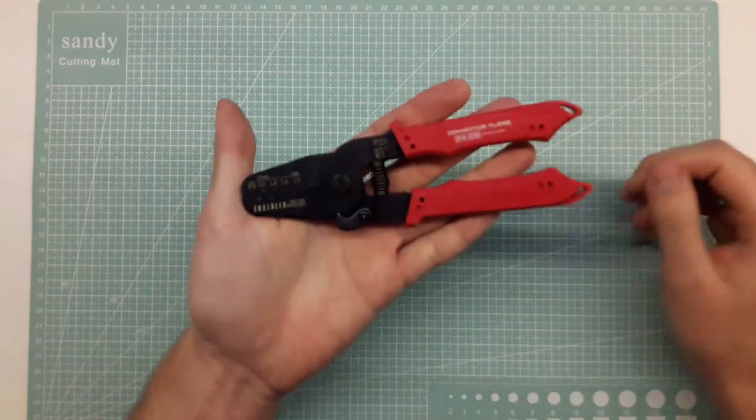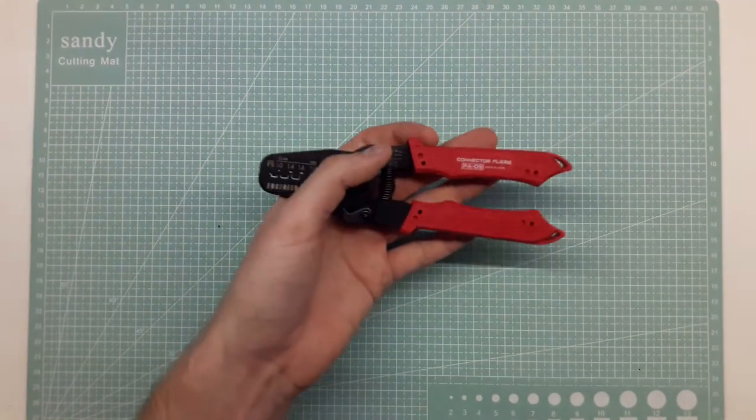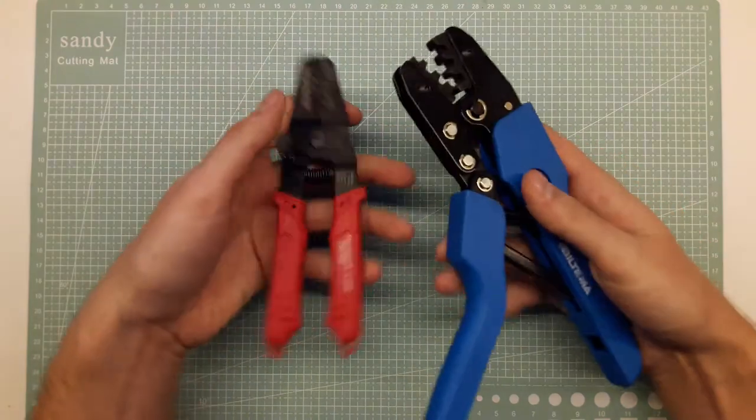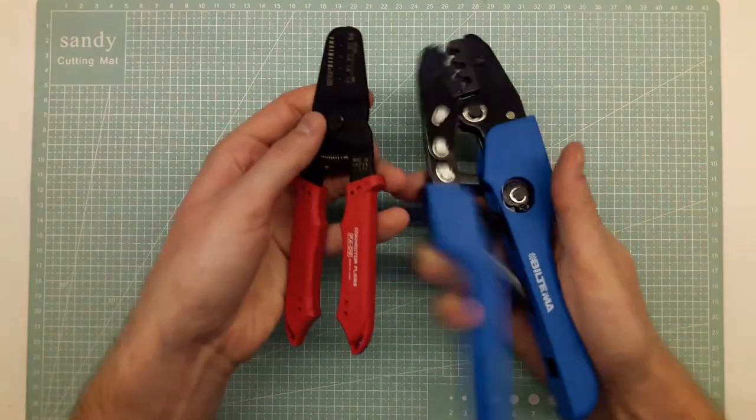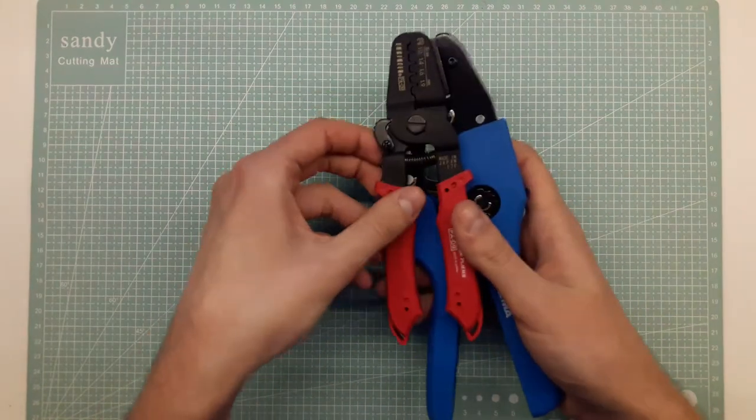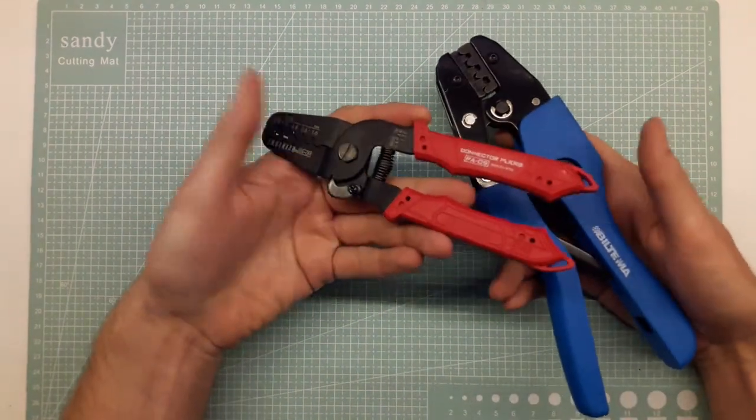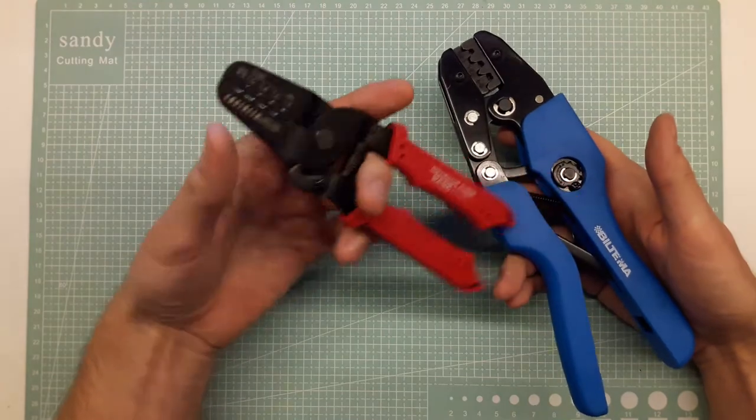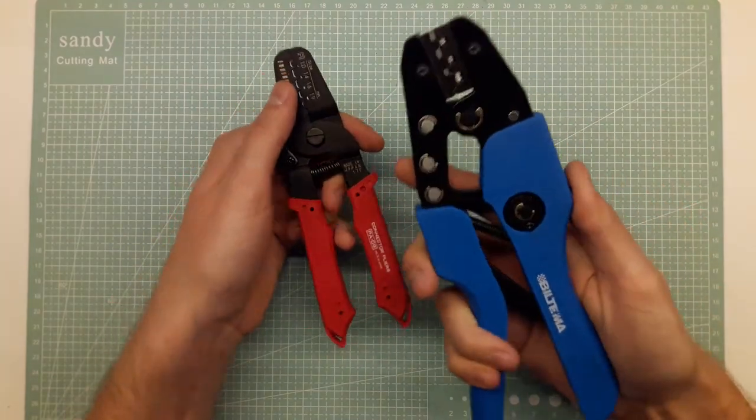Feels quite sturdy but still very light. It's about the third of the weight of this one I would say and the size when storing it as well. So good to have something in the back pocket if you're doing a lot of crimps compared to this beast so to say.